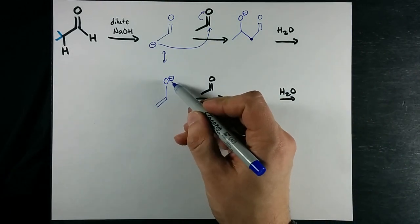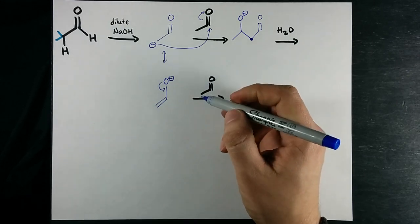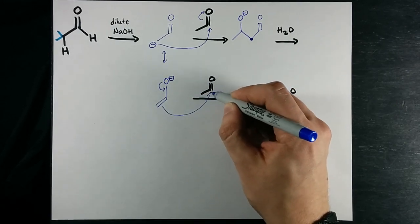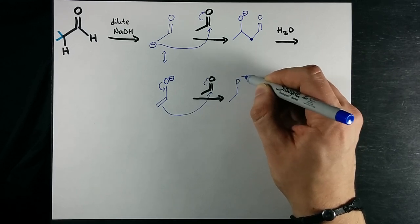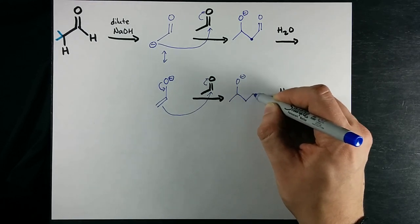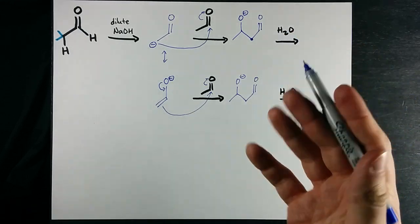If you want to start with this resonance structure, we can show the lone pair moving in here. This lone pair gets displaced to here and we end up with the exact same product. Which mechanism you show, I'm pretty sure it doesn't matter. They're both valid.